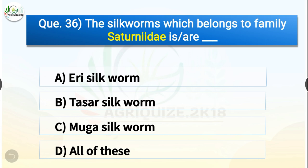Question number thirty-six: The silkworms which belong to the family Saturniidae are dash. The options are eri silkworm, tassar silkworm, muga silkworm, or all of these. The correct answer is option D — all of these. Eri silkworm, tassar silkworm, and muga silkworm all belong to the family Saturniidae.